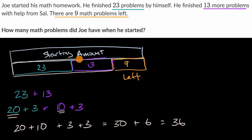So this whole amount right over here, the problems that Joe either did by himself or with the help of Sal, that is 36 problems. To figure out the starting amount, we just have to figure out the total that he did plus how many are left. So what is 36 plus 9?